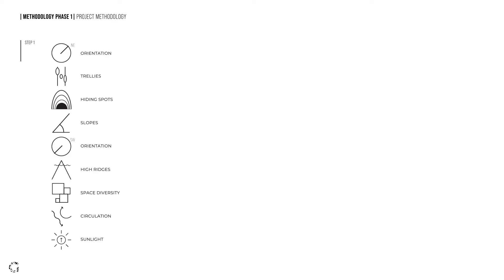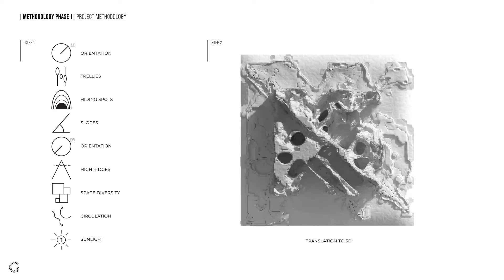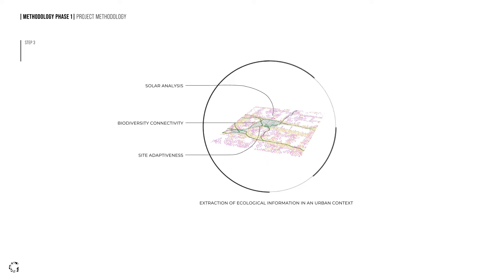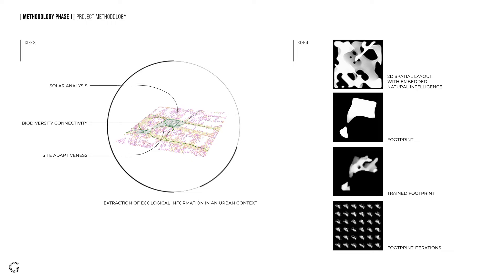We conduct our research under the following methodology. First, we study the non-human spatial conditions and parameters for their growth. Second, we insert these data into two-dimensional spatial layouts and train GANs to create ecologically intelligent iterations to be used in the design. Third, we analyze three different site conditions at an urban scale to extract various ecological information. Last, we implement the appropriate data onto the GAN-generated layouts embedded with non-linear ecological complexities, then curate them to generate the architecture.